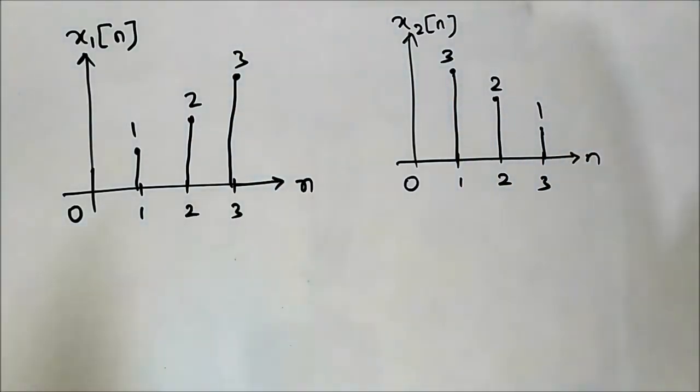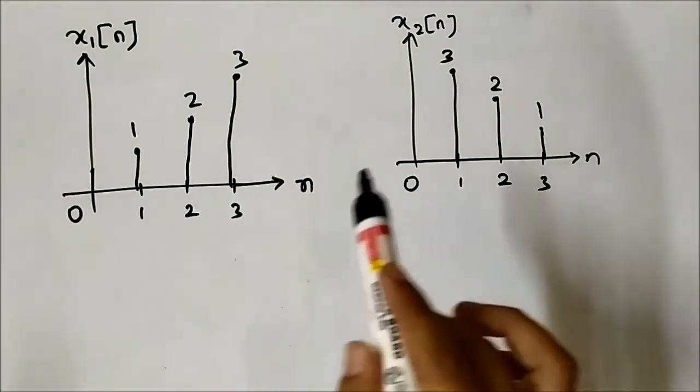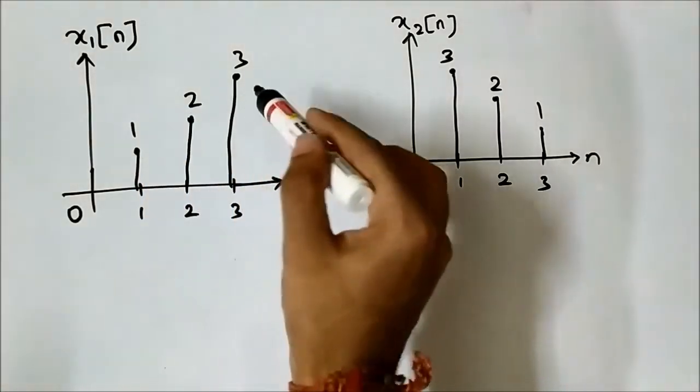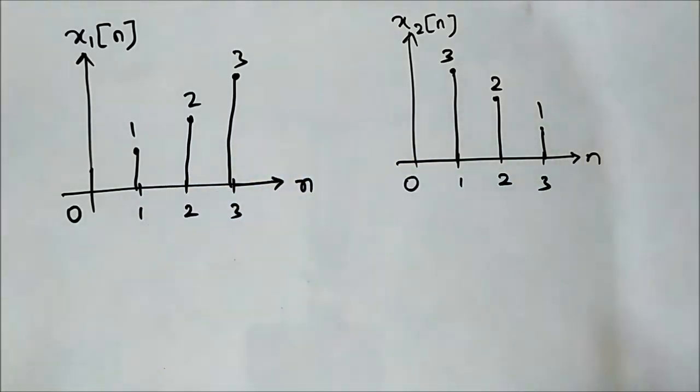So the same concept will be applied here. We just have to multiply the amplitude values at these discrete time instances.